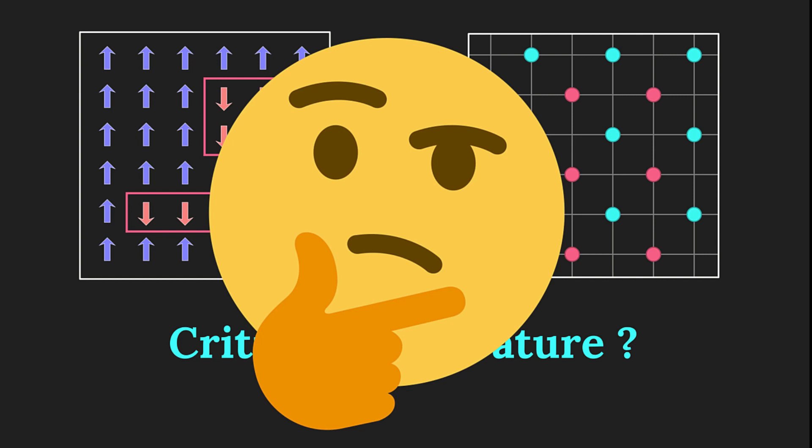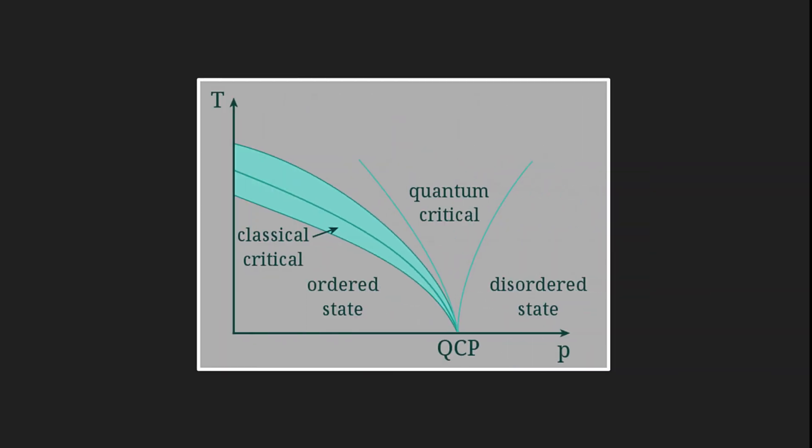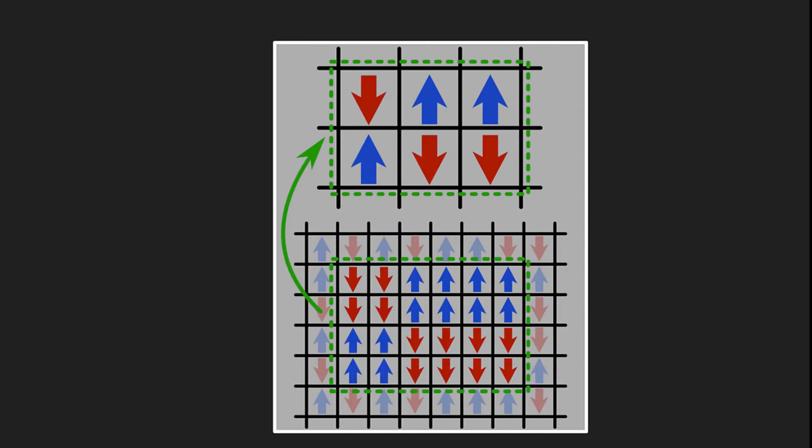So first, what is the Ising Model? Since the 1920s, the Ising Model has served as an illustrative sandbox to explore critical phenomena such as phase transitions, and more recently, ideas in statistical field theory such as universality and critical exponents.